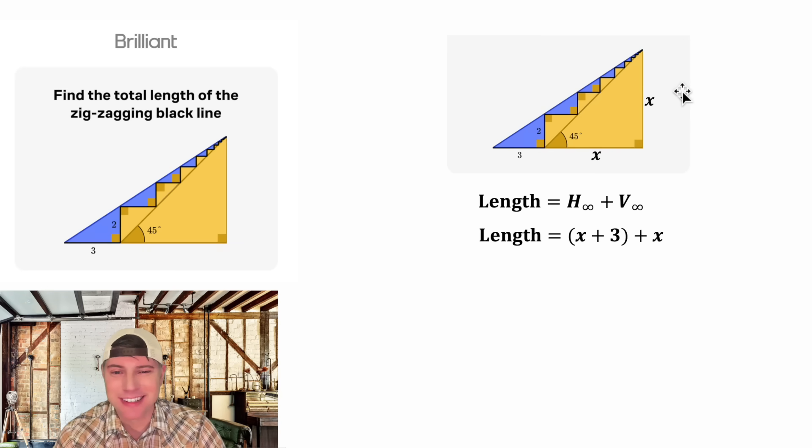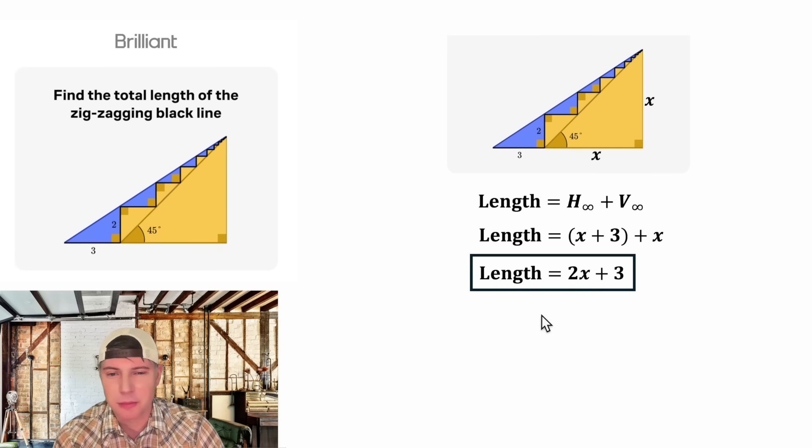Super brilliant. It's a fun method. And then from here you can combine like terms, this becomes two x plus three. Now we have a formula for the total length. Let's put a box around it.